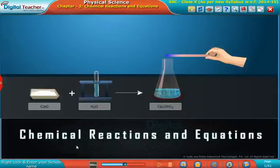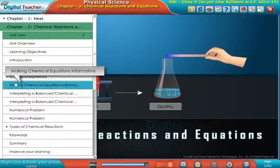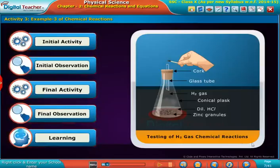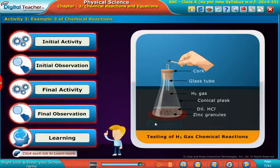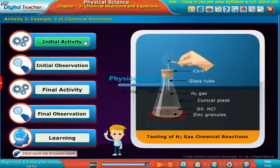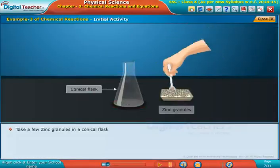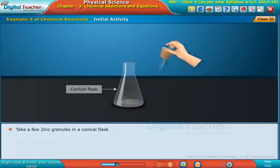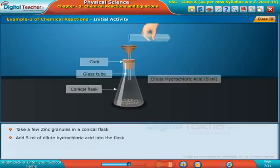Welcome to the chapter on chemical reactions and equations. Now let us do another activity to learn about chemical reactions. Click each tab to learn more. Take a few zinc granules in a conical flask and add 5 ml of dilute hydrochloric acid.